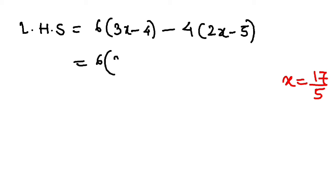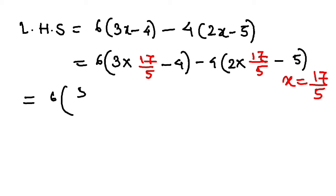So 6 into 3 into 17 by 5 is 51 by 5 minus 4, minus 4 into 2 times 17 by 5 is 34 by 5 minus 5.